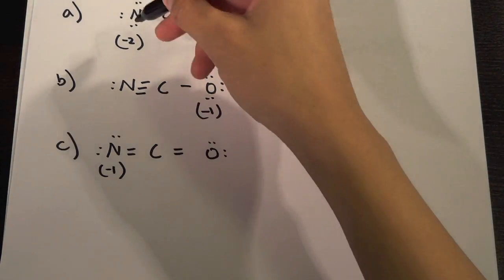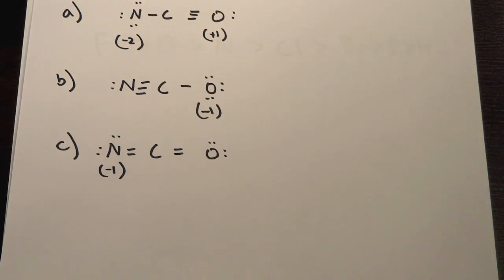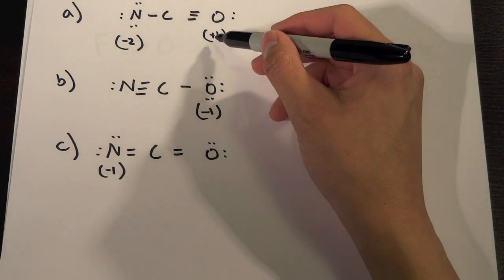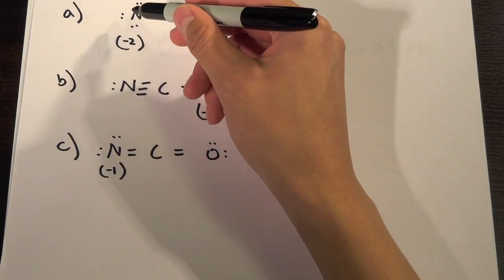So O is more electronegative than N so we want the most negative formal charge to match the most electronegative and you see this is positive one but the minus two is on the N which is not the most electronegative so that wouldn't be right.